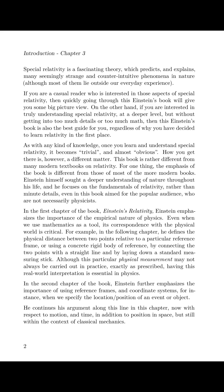He defines the physical distance between two points by connecting them with a straight line and by laying down a standard measuring stick. Although this particular physical measurement may not always be carried out in practice exactly as prescribed, having this real-world interpretation is essential in physics. In the second chapter of the book, Einstein further emphasizes the importance of using reference frames and coordinate systems when we specify the location or position of an event or object. He continues his argument in this chapter, now with respect to motion and time, in addition to position in space, but still within the context of classical mechanics.